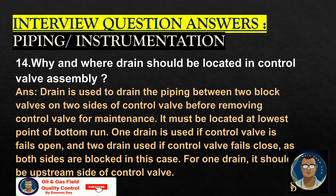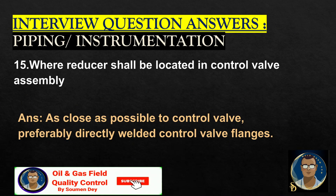Why and where should a drain be located in a control valve assembly? A drain is used to drain the piping between two block valves and two sides of the control valve before removing the control valve for maintenance. It must be located at the lowest point of the bottom run. One drain is used if the control valve fails open. Two drains are used if the control valve fails closed, as both sides are blocked. For one drain, it should be on the upstream side of the control valve.